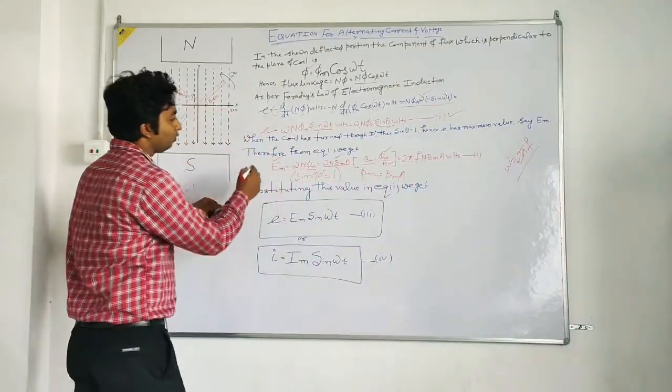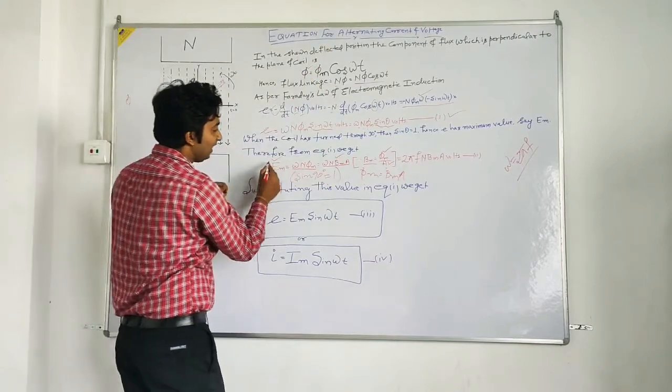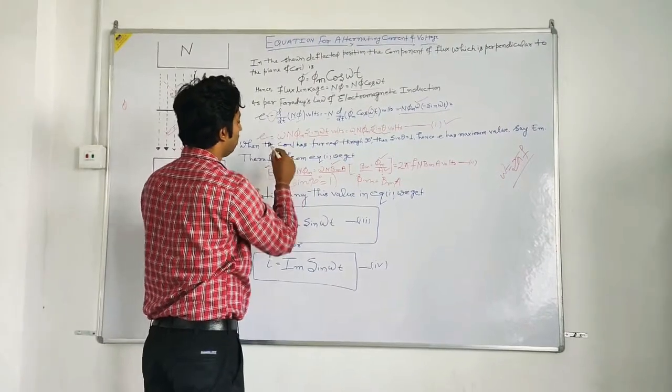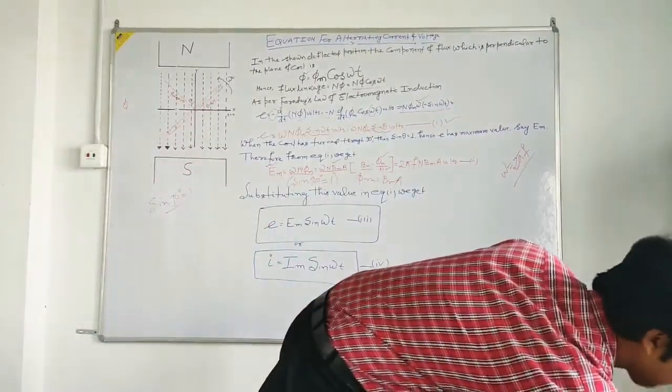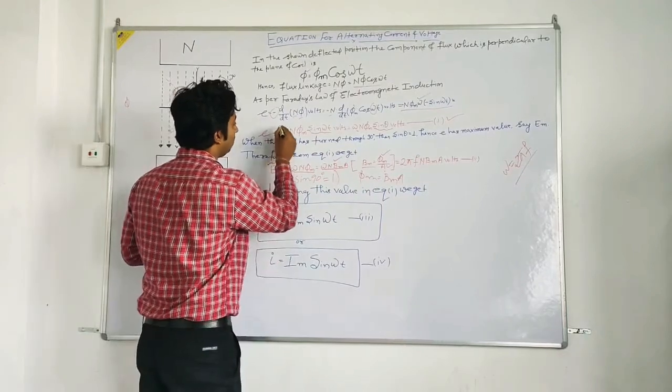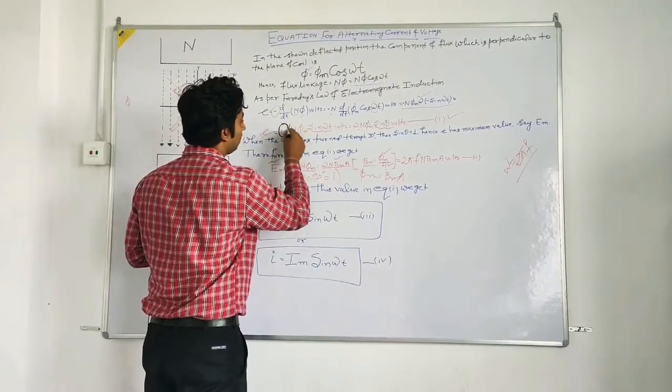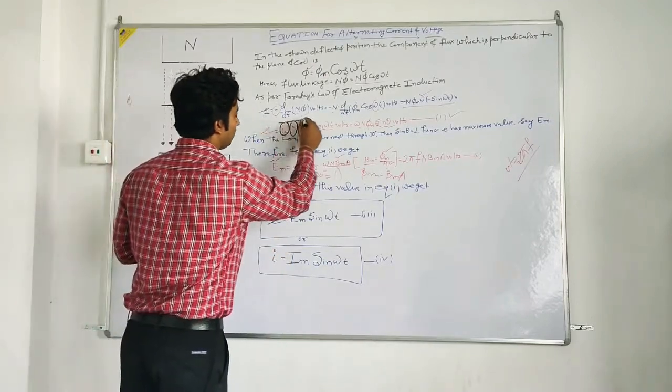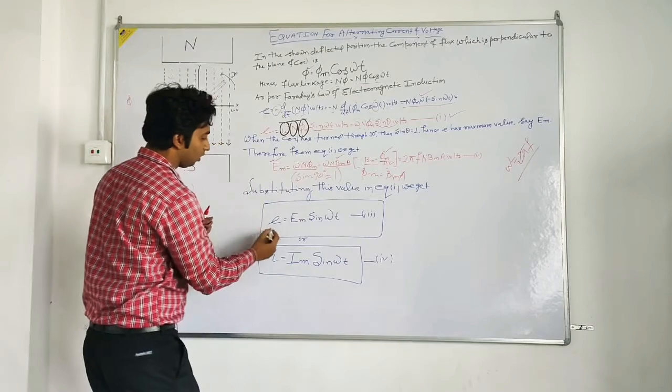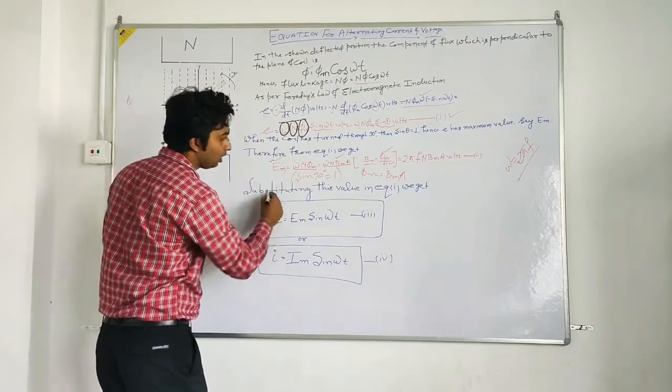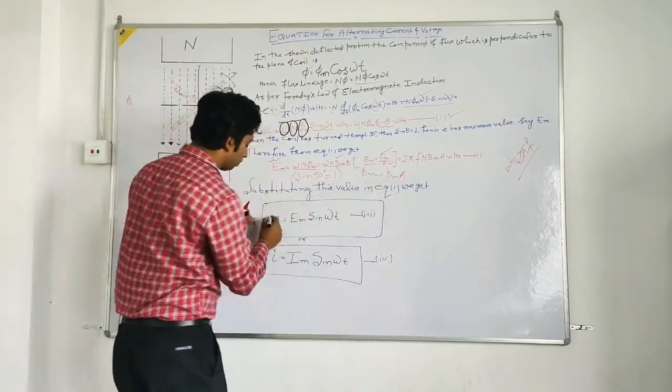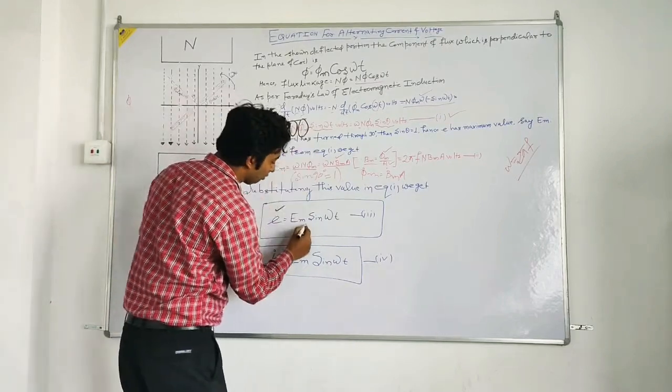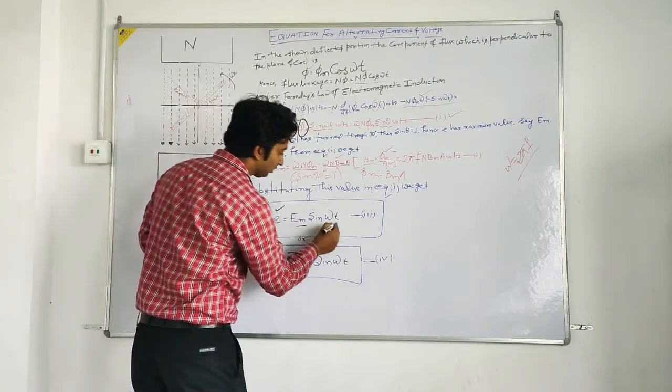Now as we have em equal to omega n phi m, and in equation 1 we also have these variables omega n and phi m, this can be replaced by em in equation 1. So substituting these values in equation 1 we get e equal to em sin omega t.